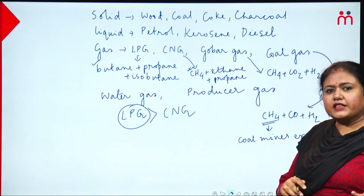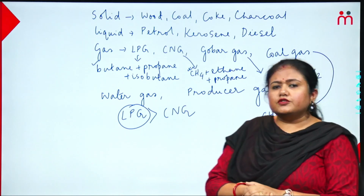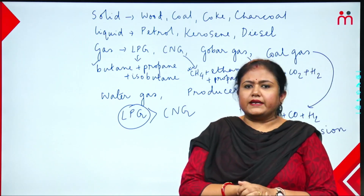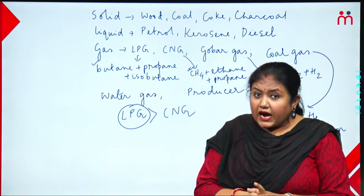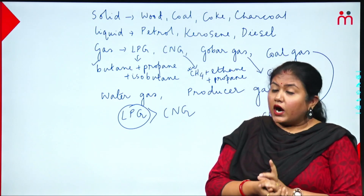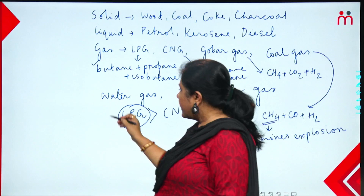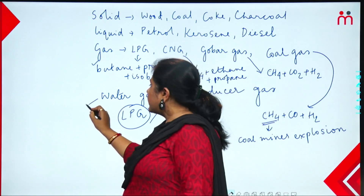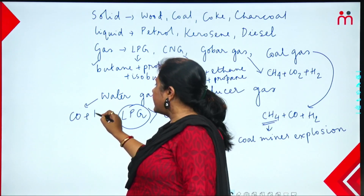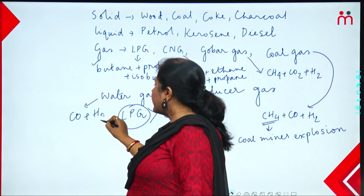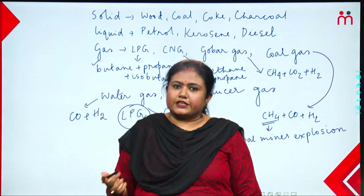Methane reacts with oxygen in air, and this reaction causes coal mine explosions. So coal mine explosions are due to the methane-oxygen reaction inside the mine.